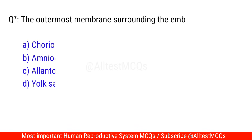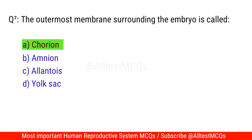Question No. 7: The outermost membrane surrounding the embryo is called? The correct option is A. Chorion.